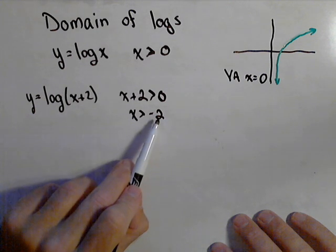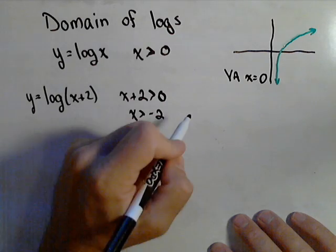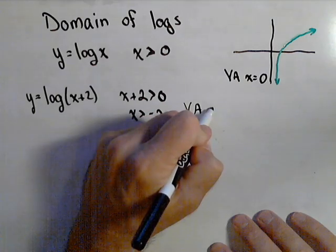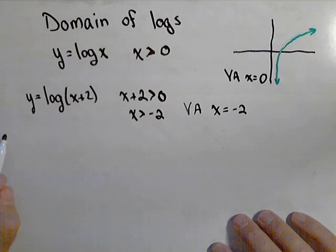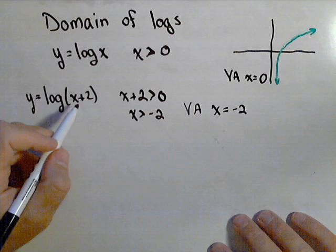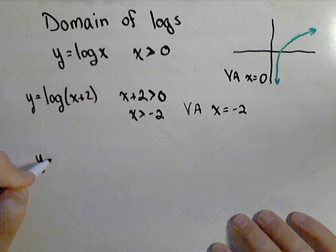Now, that place that makes it zero, in this case, negative two is what makes it zero, is our vertical asymptote. So our vertical asymptote in this case is x equals negative two. Now, this process will work as long as what we have in here is linear. And we'll look at a quadratic one here in a second. Let's do another one.